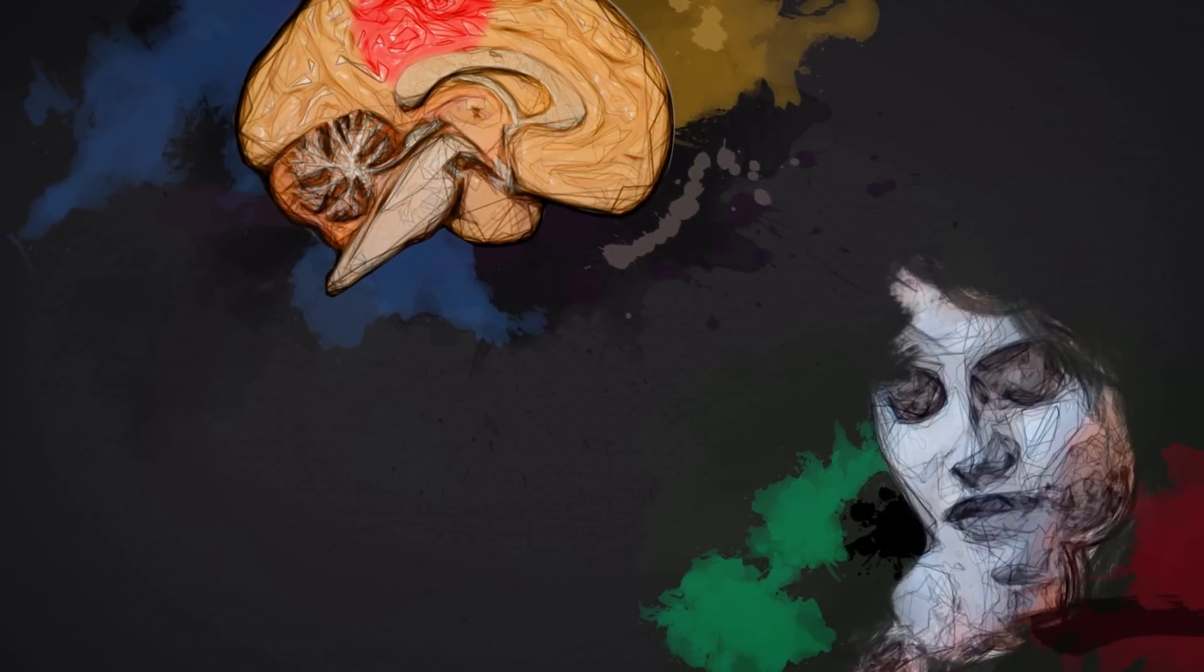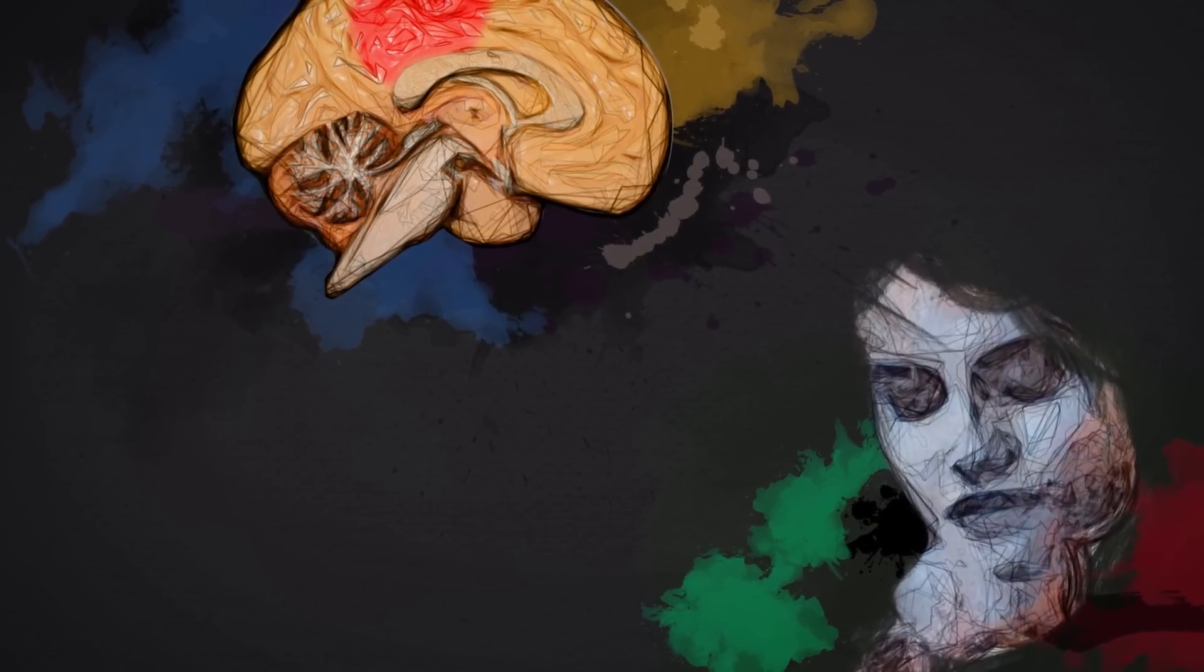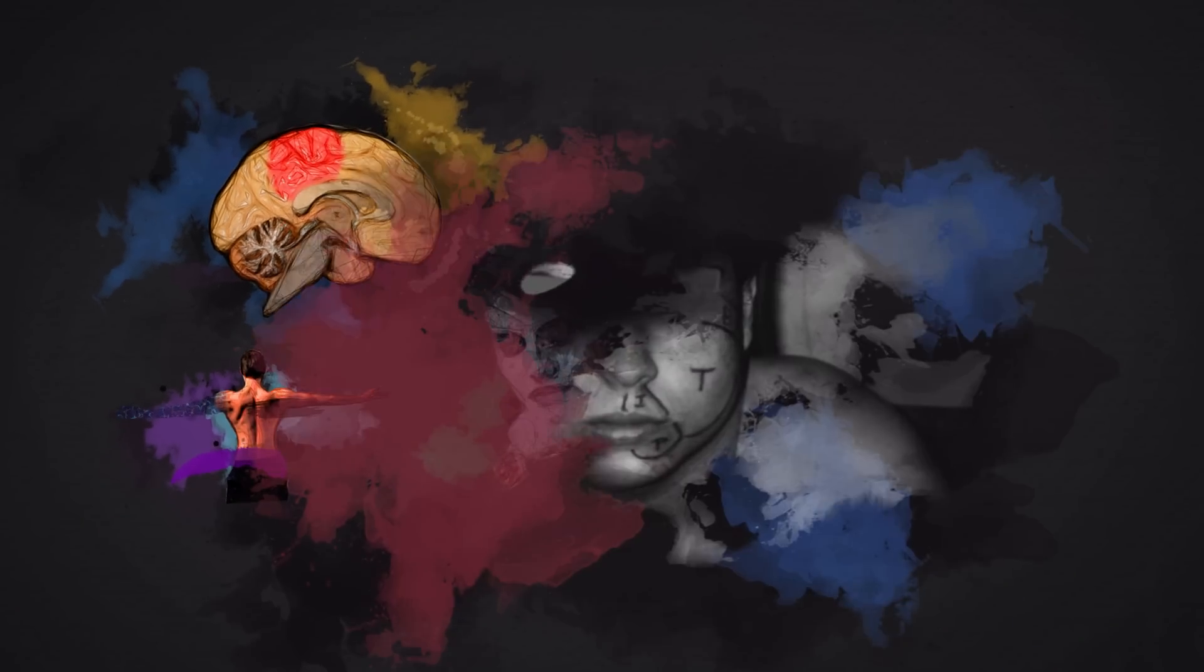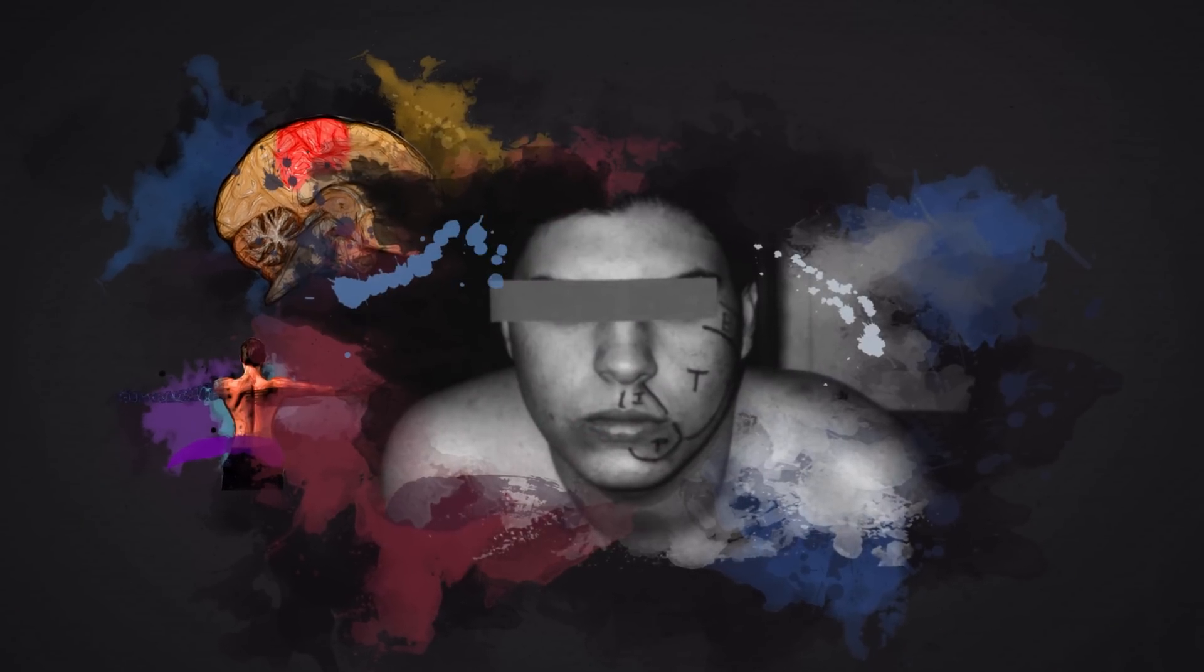This means that whenever certain parts of the face are touched, we would experience that sensation not just in our face, but in our phantom limb too. Here you can see a picture of scientists diagramming where parts of the hand and arm are on someone's face.